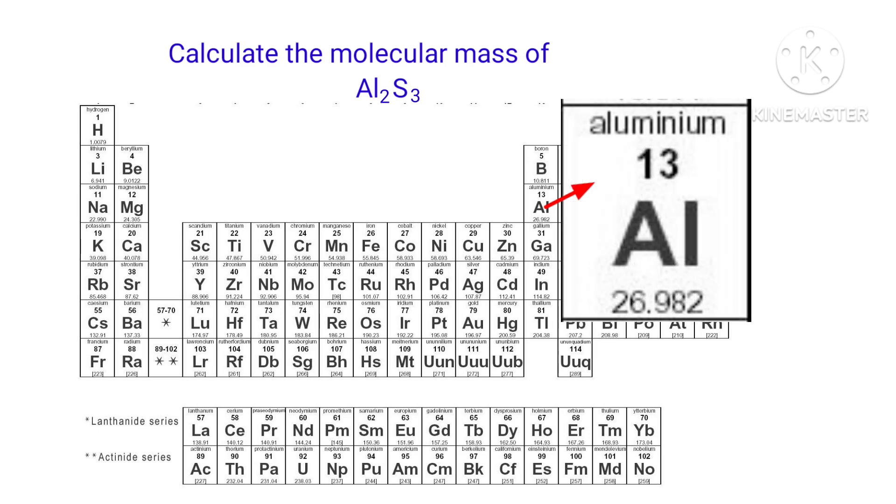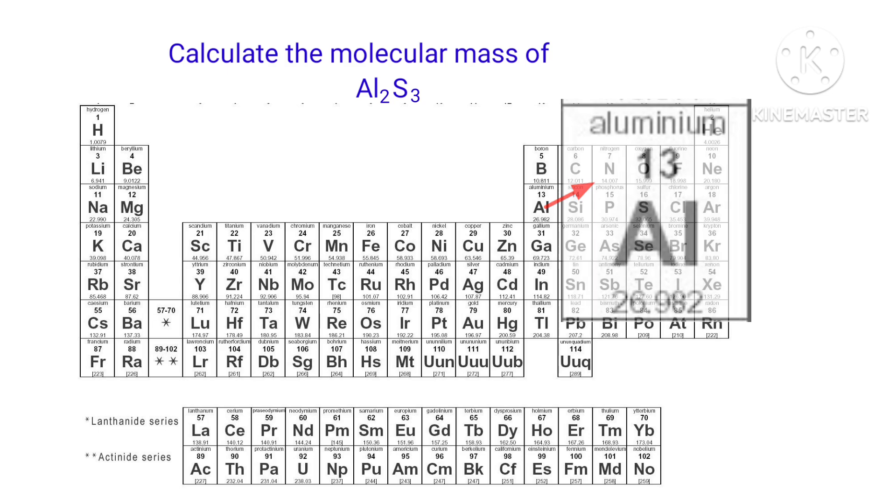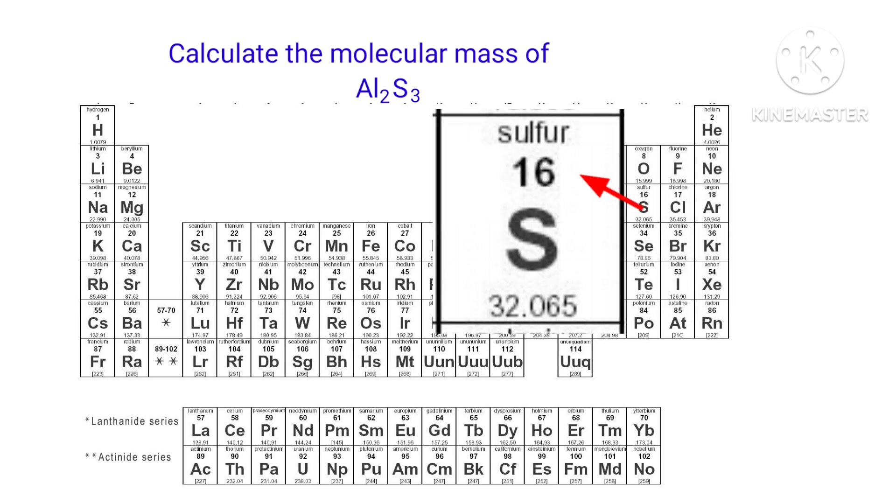The atomic mass of aluminium is 26.982, and the atomic mass of sulphur is 32.065.